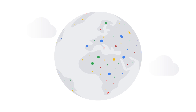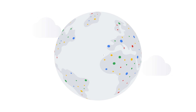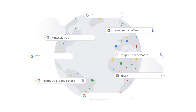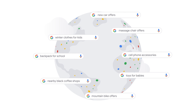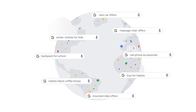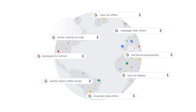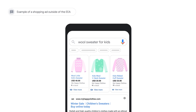Every day, hundreds of millions of people turn to Google for help with their shopping. So how can you show potential customers you have exactly what they're looking for? Shopping ads put your products in front of potential customers in a visual and engaging way that gives them detailed information about what you're selling before they even click on your ad.